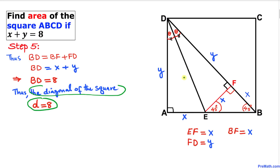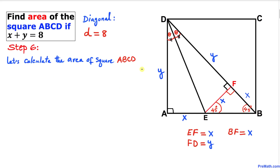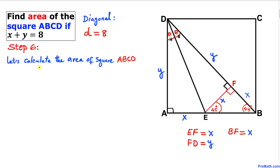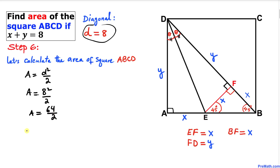For the final step, we calculate the area of square ABCD whose diagonal d equals 8 units. The area formula for a square in terms of its diagonal is: area equals d squared divided by 2. Substituting d equals 8: area equals 8 squared divided by 2, which is 64 divided by 2, giving an area of 32 square units.